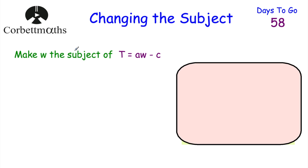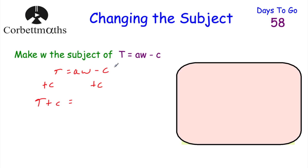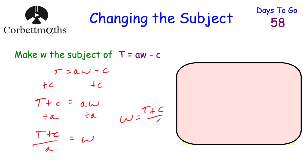Here's another question for you to try: make W the subject of T equals AW subtract C. So first, let's get rid of the subtract C by adding C to both sides. That gives T plus C on the left hand side, and AW on the right. Now we've got AW — to get W on its own, divide both sides by A. On the left hand side: T plus C over A. On the right hand side: just W. So W equals T plus C over A.